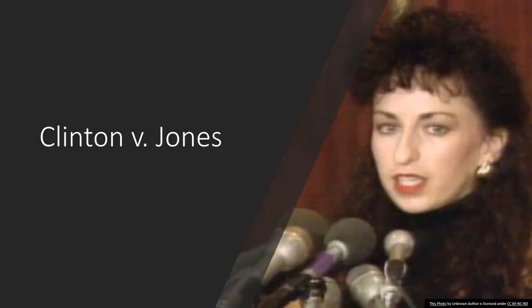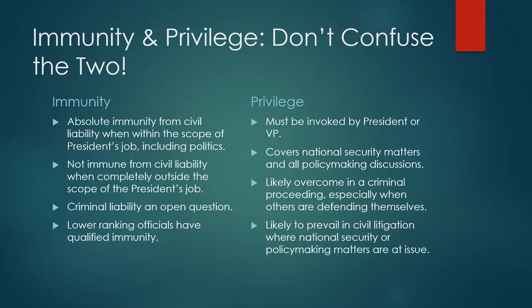Clinton versus Jones is the case where the Court says there are limits to immunity. Bill Clinton was accused of sexually harassing Paula Jones while he was governor of Arkansas — having his security detail bring her to his hotel suite. First, he wasn't president yet, and second, even if he had been president, sexually harassing somebody has absolutely nothing to do with the official duties of being president or being a politician. The president is not immune for something that has absolutely nothing to do with being president.